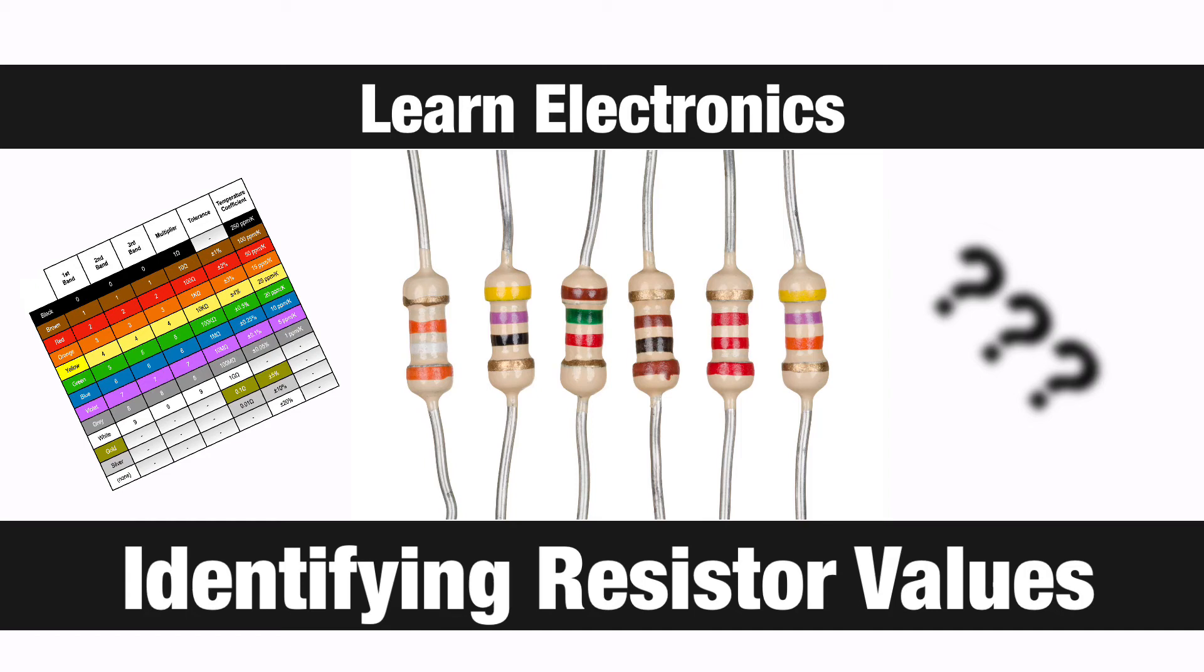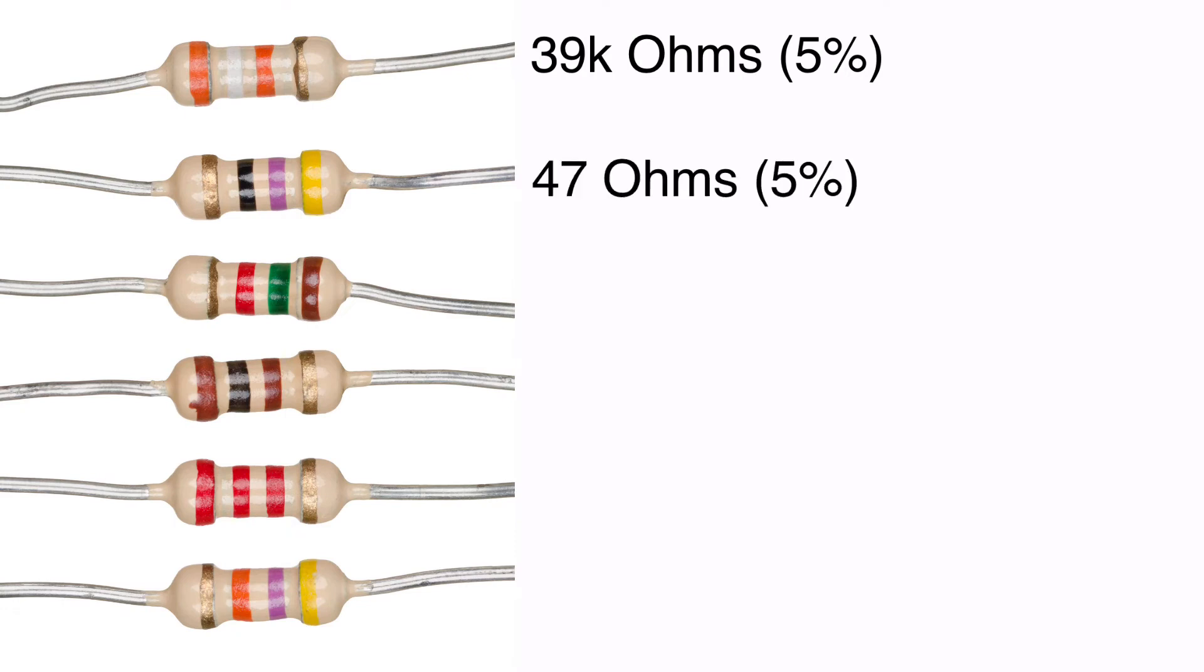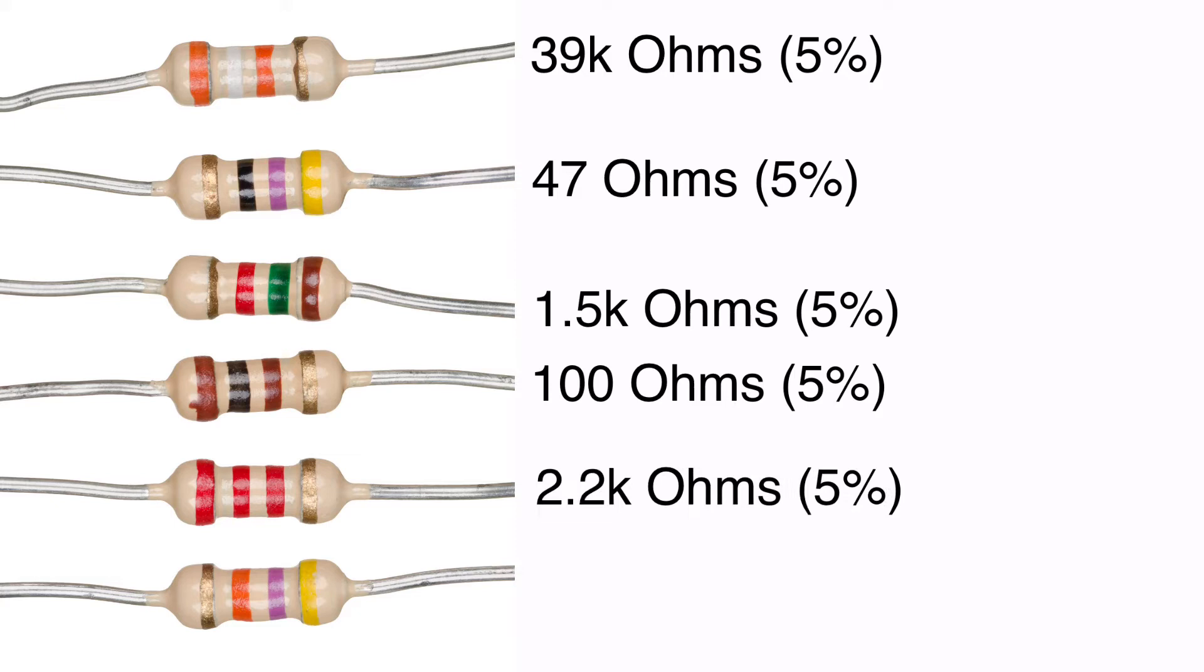Resistors are one of the most common components you'll encounter when working with electronics. The resistance value of resistors can range anywhere from thousandths of an ohm all the way up to millions of ohms, and so it's important to have a good understanding of how to identify these resistance values when trying to find resistors for a project.